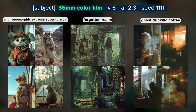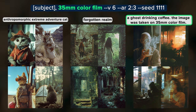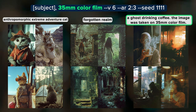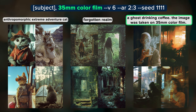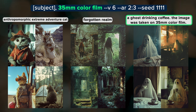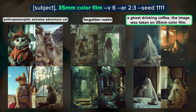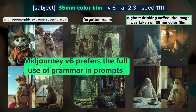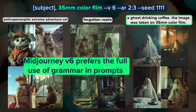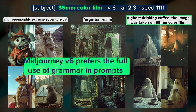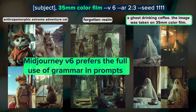However, if I restructure the prompt and ask for 'a ghost drinking coffee, the image was taken on 35mm color film,' the images I get are in the same style but now we have a ghost. Midjourney V6 actually prefers the full use of grammar, so if simple subject-comma-style prompts like these aren't working well for you, just try putting them into sentences.